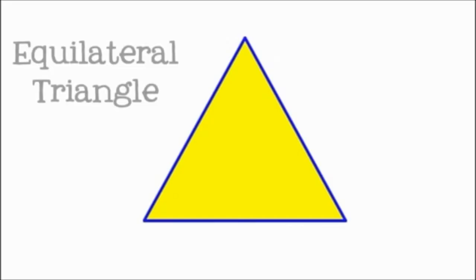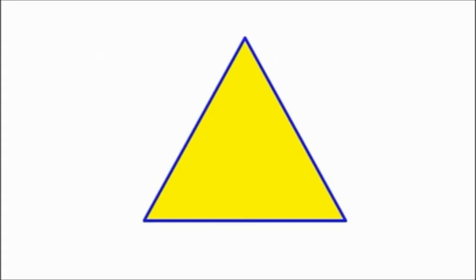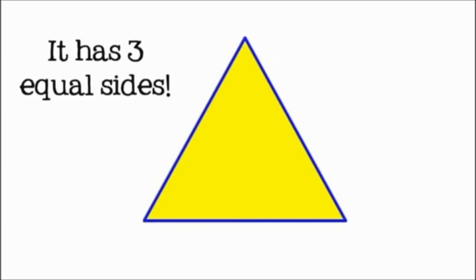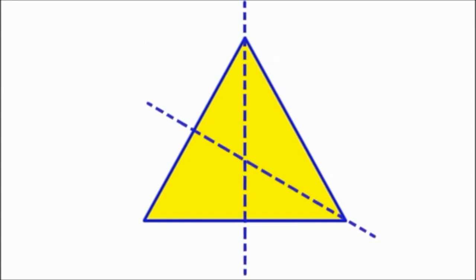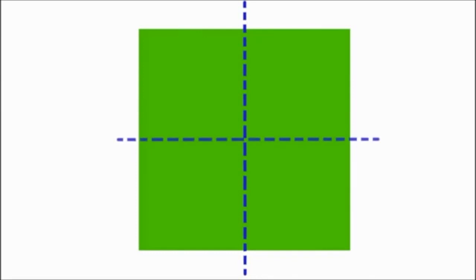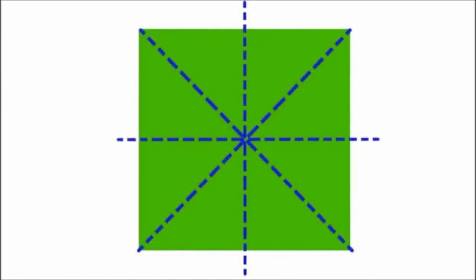This triangle, on the other hand, has three lines of symmetry. You could fold it here, here, or here, and each time the halves would be the same. A square has four lines of symmetry. You could divide it in half from left to right, top to bottom, or from corner to corner either way.